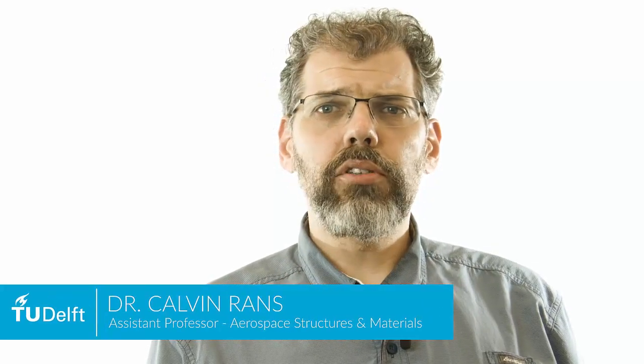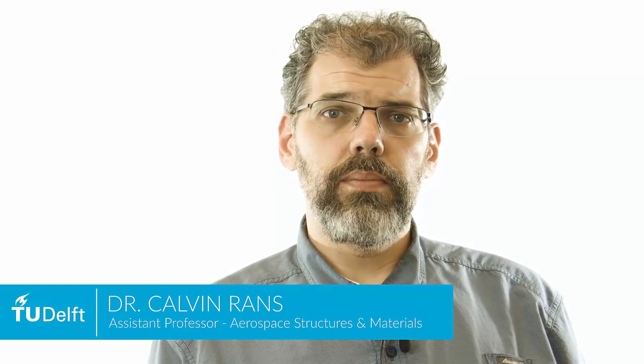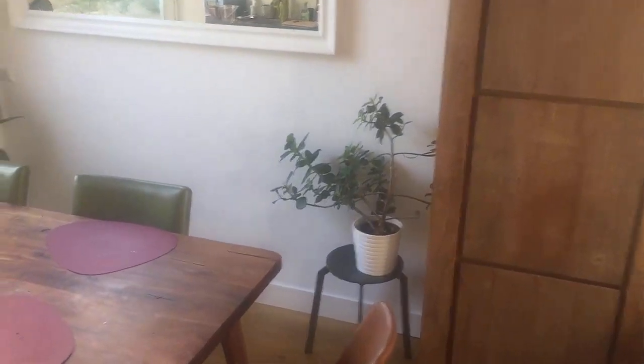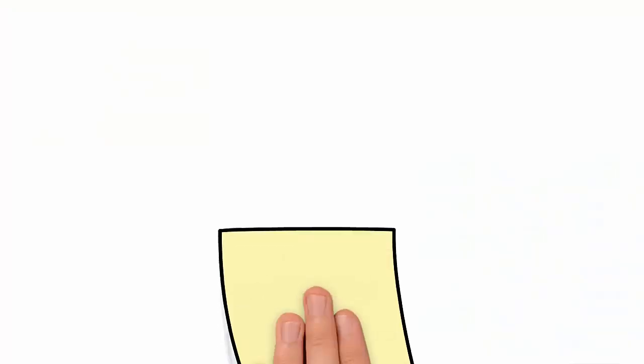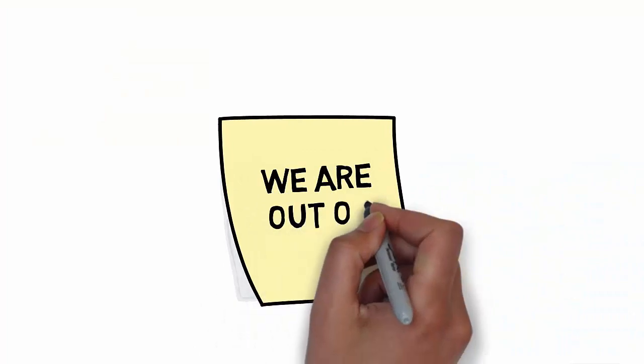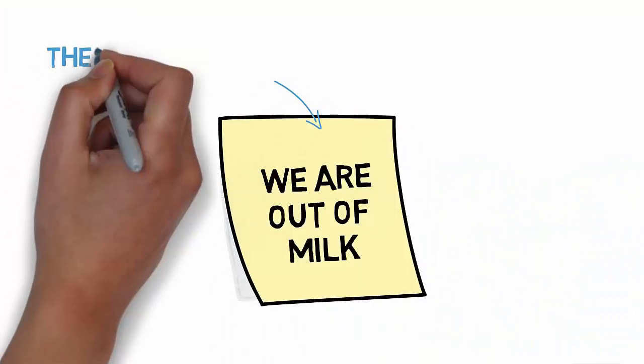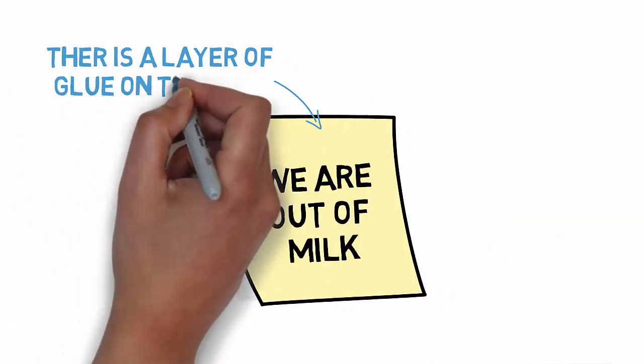Just this morning I encountered two classes of joining methods. When I went to the fridge to get my morning breakfast, I saw that my son had left me a note on the fridge using a sticky note. Such a note relies on a layer of glue to cause the paper to stick to the surface of whatever object you want it to.